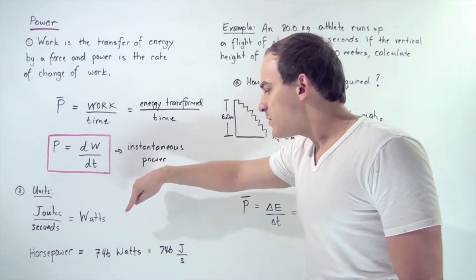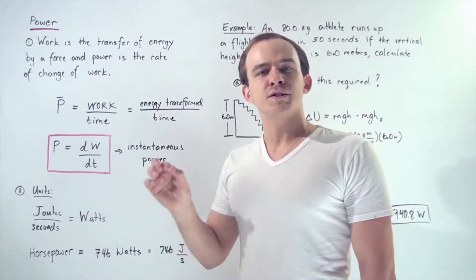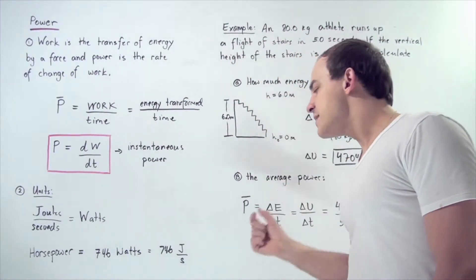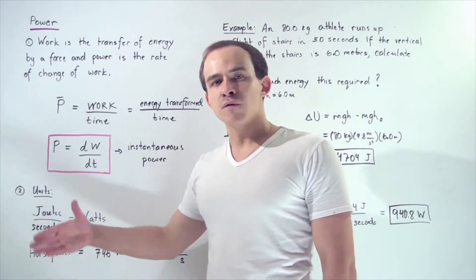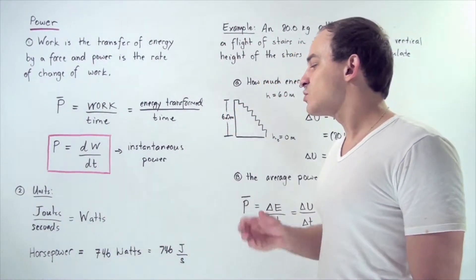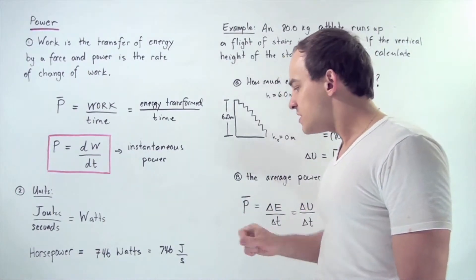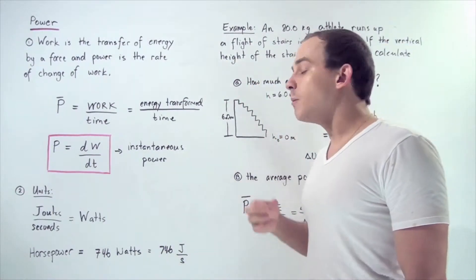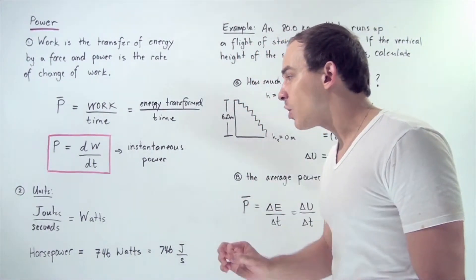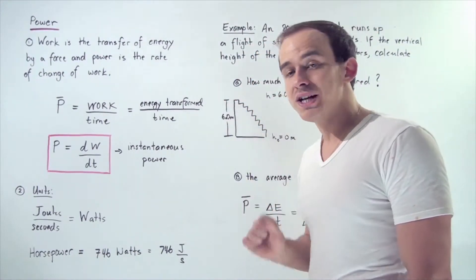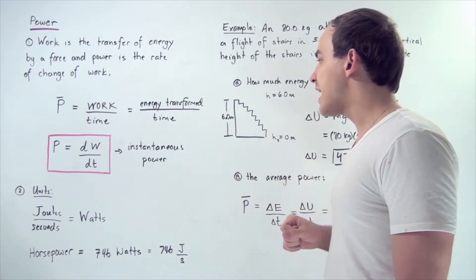One horsepower is equivalent to 746 joules per second. For example, if our car has 1,000 horsepower, we simply take this number multiplied by 1,000 and that gives us the power of our car engine in terms of joules per second.